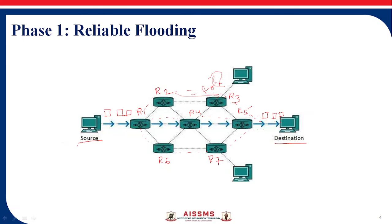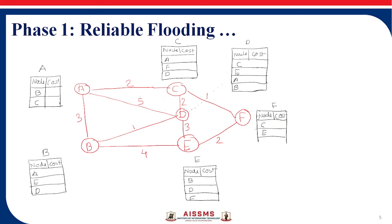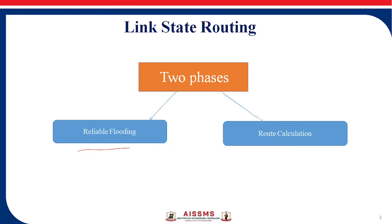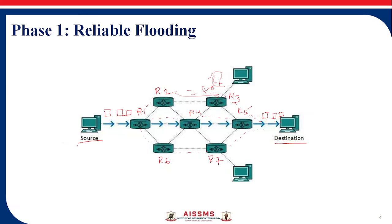Then we will see the actual reliable flooding. Phase 1 is clear. In the second phase, route calculation, the route calculation uses Dijkstra's algorithm. So there are two phases: Phase 1 is flooding and Phase 2 is route calculation. The route calculation will be covered in the next part of the lecture. So here we go with the first phase — reliable flooding: find out the link state and flood that link state information across the network. The second phase uses Dijkstra's algorithm to find the shortest path. First, we will see the link state topology here.